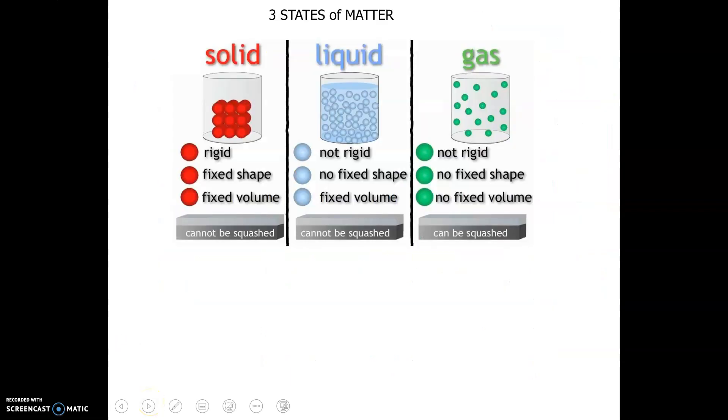All right, the three states of matter. Hopefully you've taken this in earlier science classes. We have solid, liquid, or gas. With solid, our particles are super close together, so they're rigid. Anything that's solid is a fixed shape and has a fixed volume.